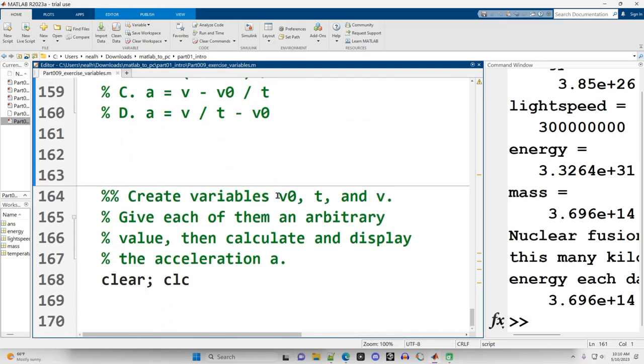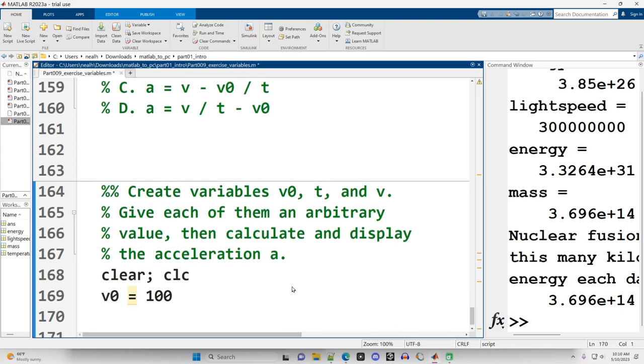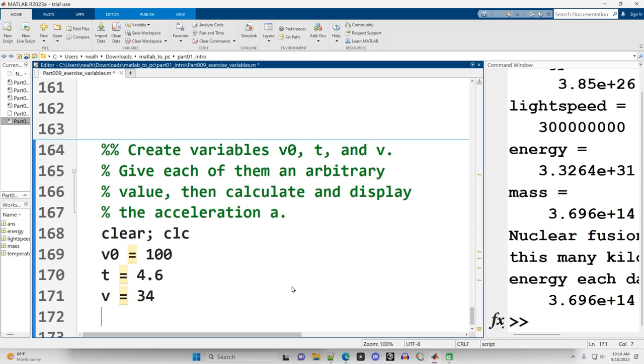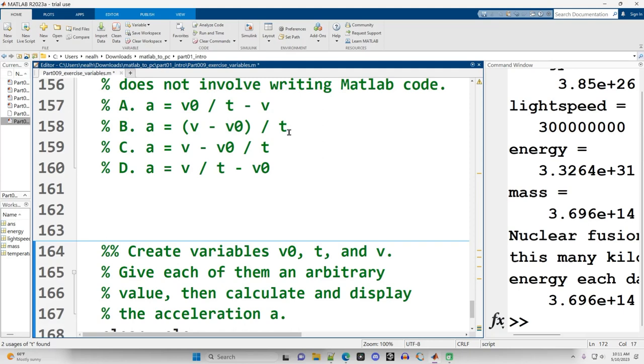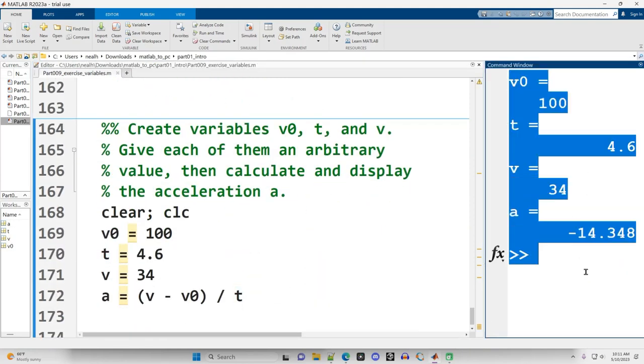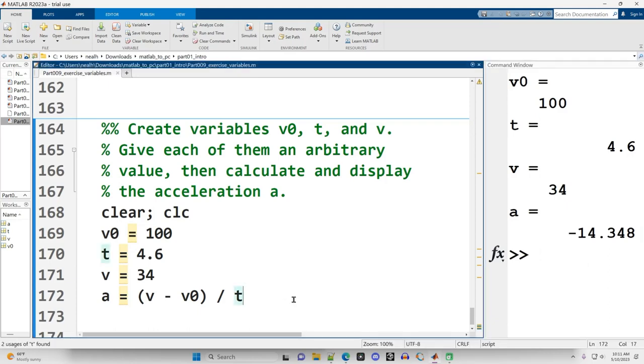All right lastly create variables v0, t, v. Give each of them an arbitrary value then calculate and display the acceleration a. So I'm just going to do some arbitrary numbers. I'm not really specifying my units so who the heck knows what any of this means. But it's just putting it all together just to show that we can. Did I do that right? Yeah. All right great. So there's just a little example problem. And that's the end of this exercise.